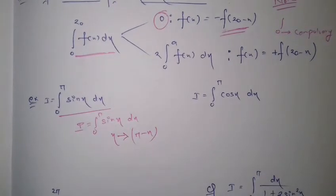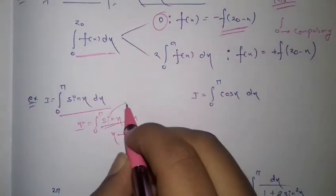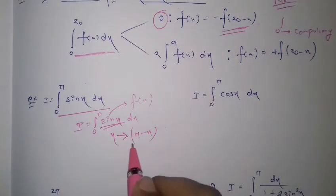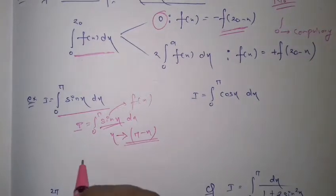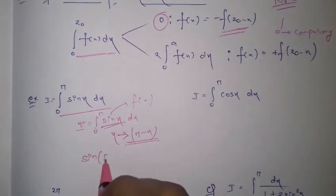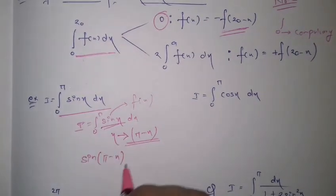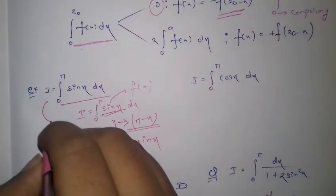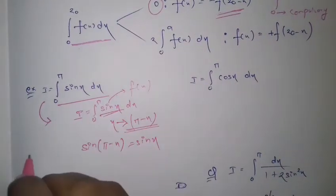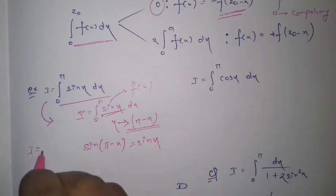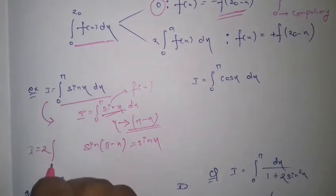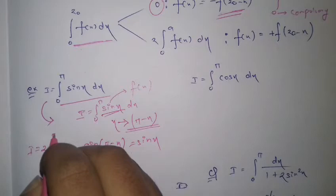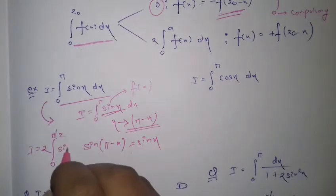You will see that the function f(x) doesn't change its value when you replace x with pi minus x, because sin(pi - x) = sin x. So you can write this integration as I = 2 ∫₀^(π/2) sin x dx — the upper limit is halved.